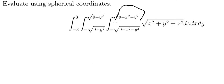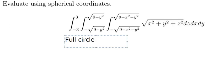If we look carefully about the boundaries in here, we see that they go about a full circle. And now we can use spherical coordinates. We have x square plus y square plus z square equals to rho square.